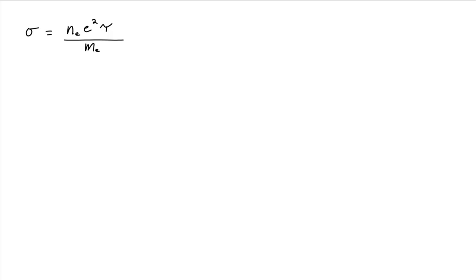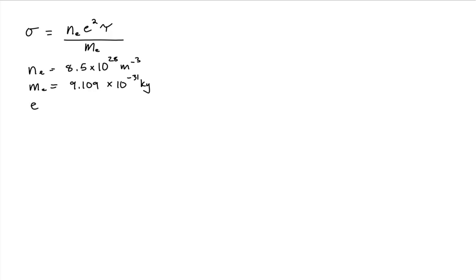Conductivity is based off of the properties of the material itself. It's based off of the number density, which for copper is 8.5 times 10 to the 28th reciprocal meters. Conductivity also depends on the magnitude of charge of a charge carrier — our charge carriers are electrons — and the mass of an electron is 9.109 times 10 to the minus 31 kilograms. The magnitude of an electron's charge is 1.602 times 10 to the minus 19 coulombs.